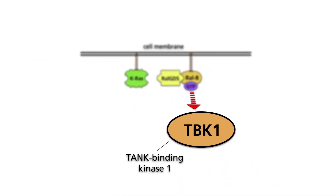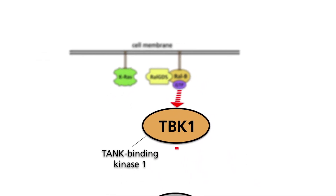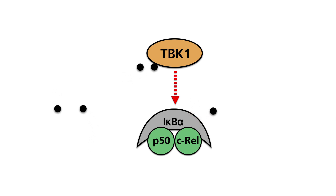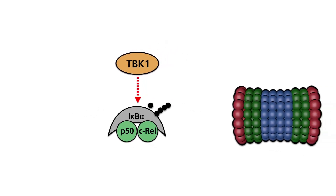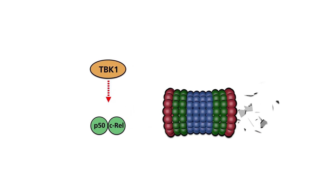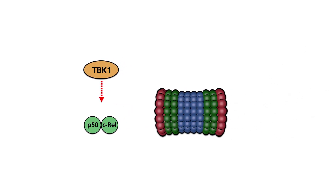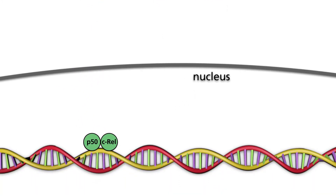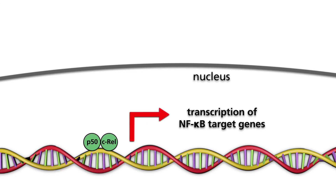Active RAL-B activates what is called the TANK-binding kinase-1, which phosphorylates serine residues of the destruction box of the IκB-alpha protein in a complex with the NF-κB family members P50 and C-REL. Subsequently, IκB-alpha is ubiquitinated and directed to the proteasome. The P50-C-REL dimer enters the nucleus, binds to consensus motifs in the DNA, and regulates NF-κB target genes which promote tumor growth.